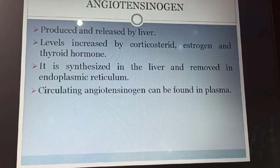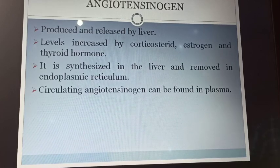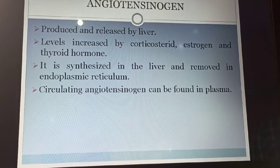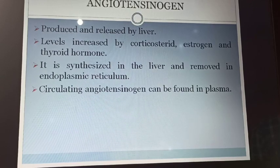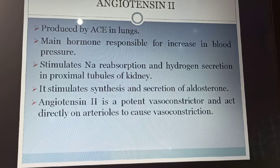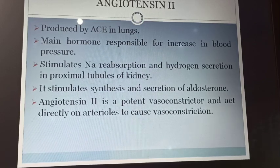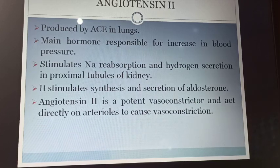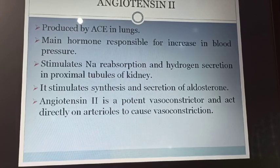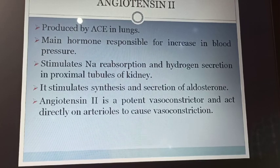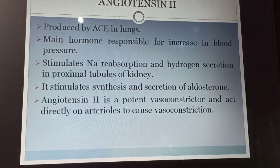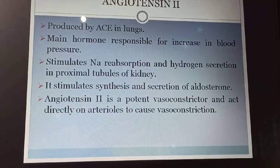Next, angiotensinogen. Angiotensinogen is produced by the liver and its secretion is increased by glucocorticoids and estrogen. It is a plasma globulin. Next, angiotensin-2. Angiotensin-2 is a potent vasoconstrictor. Angiotensin-2 receptors may be present in the blood vessels, but they are also present in the adrenal gland. The main function of angiotensin-2 is vasoconstriction — it constricts the blood vessels. Vaso means blood vessels, constriction means narrowing the diameter. Another function of angiotensin-2 is it produces aldosterone and antidiuretic hormone ADH.